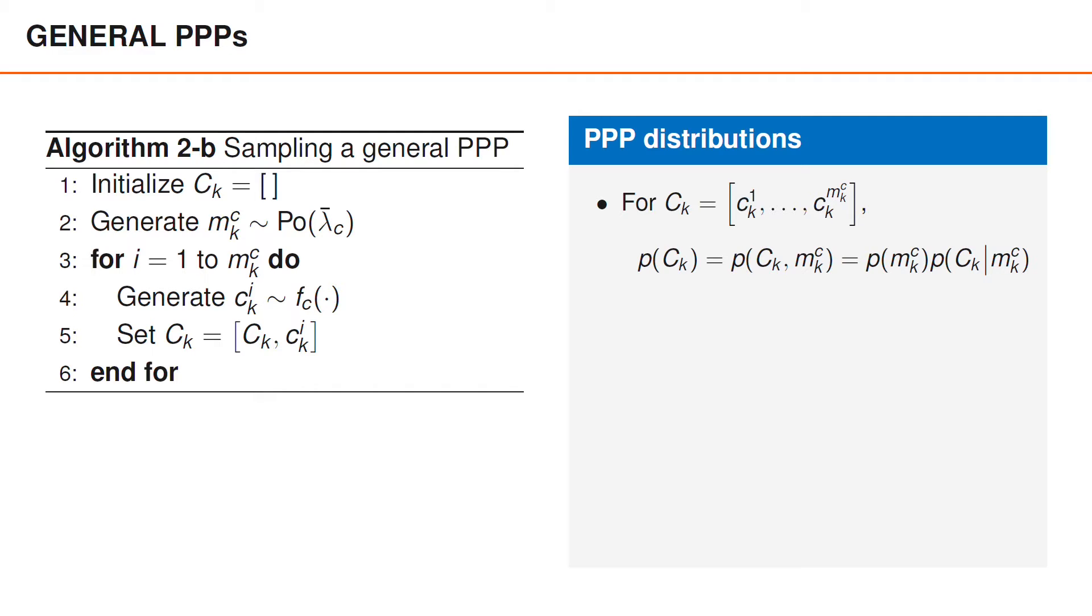The joint distribution of mkc and Ck can now be factorized into the product of the distribution of mkc times the distribution of Ck given mkc, which are two distributions that we know. The first corresponds to the probability of obtaining precisely mkc vectors, which is the Poisson distribution with parameter lambda bar c, evaluated at mkc. The second factor is the probability to obtain the vectors Ck1, Ck2, and so on, given the value of mkc.